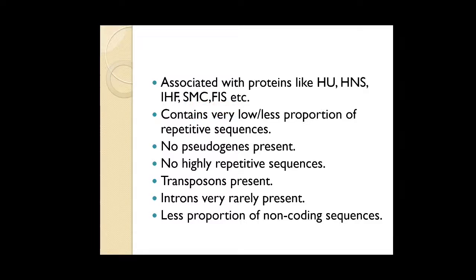The GC content is very low with a less proportion of repetitive sequences. No pseudogene is present. A pseudogene means a gene — suppose a gene 'A' is working normally, but then a mutation forms in it, and after that mutation it stops working. That non-functional gene is also called a pseudogene — meaning an inactive normal gene. There are no highly repetitive sequences; transposons (jumping genes) are present; introns are very rarely present, with less proportion of non-coding sequences.